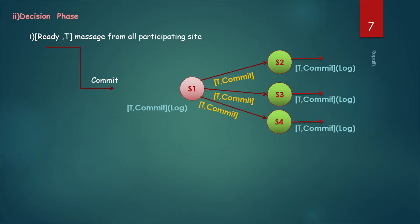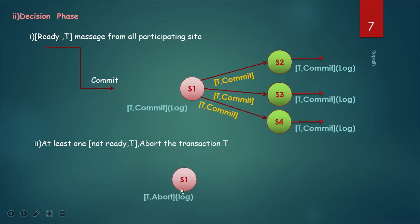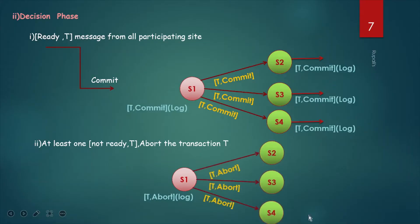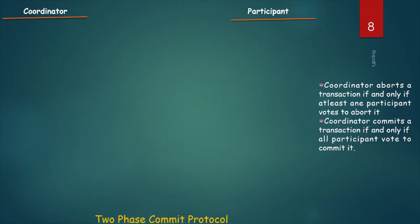Another situation may occur where there is at least one T-not-ready message from any of the participating sites. Then the coordinator site writes T-abort in its own log. Because two-phase commit protocol ensures atomic commitment for distributed transactions, S1 writes T-abort in its own log and sends that message to all other participating sites. All other participating sites then write T-abort in their own logs and the transaction will be aborted.